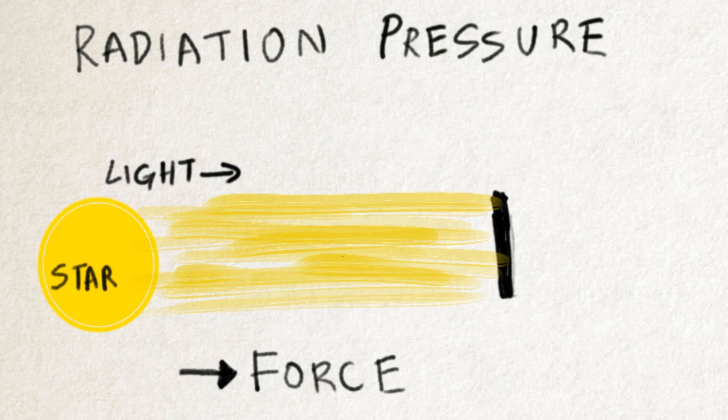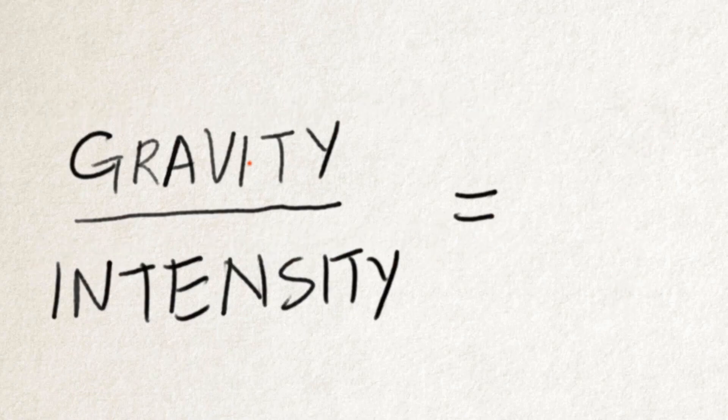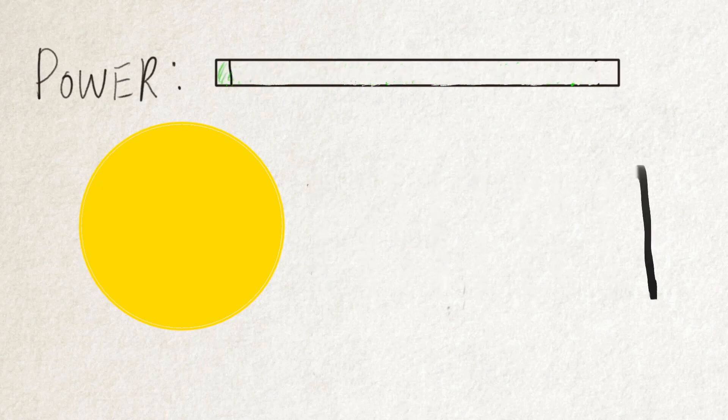And since both intensity of light and gravitational force follow the inverse square law, the ratio of gravitational force and radiation pressure, which is directly proportional to the intensity, will be a constant. Thus, if a sail is of the right mass, then it can be as close or as far away from the star, and this can be used to adjust the power output of the Dyson Bubble.